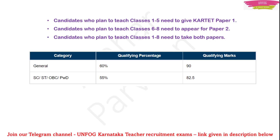If you belong to SC/ST, OBC, or you are PWD (physically handicapped), then for 55% only you qualify for Karnataka TET. That means if you score 82.5 marks out of 150, then you will qualify Karnataka TET.